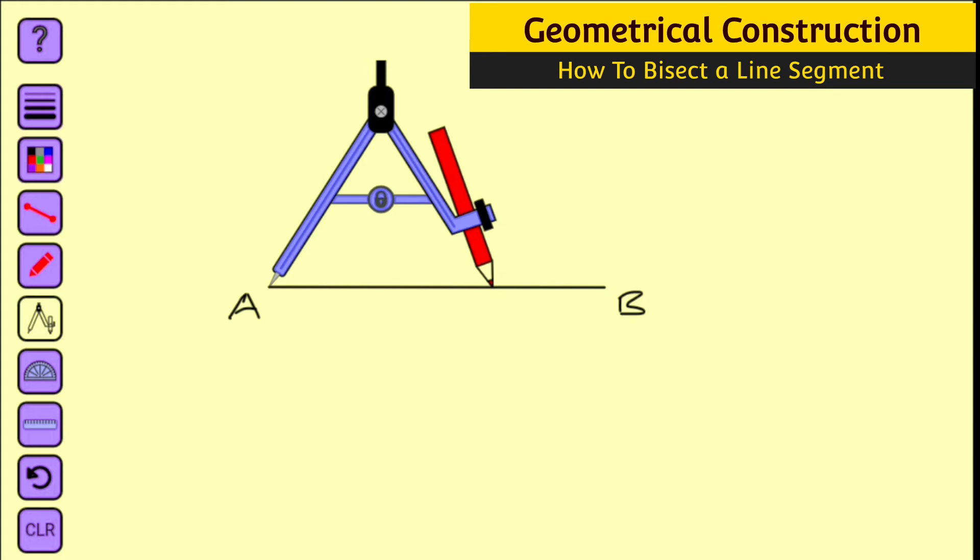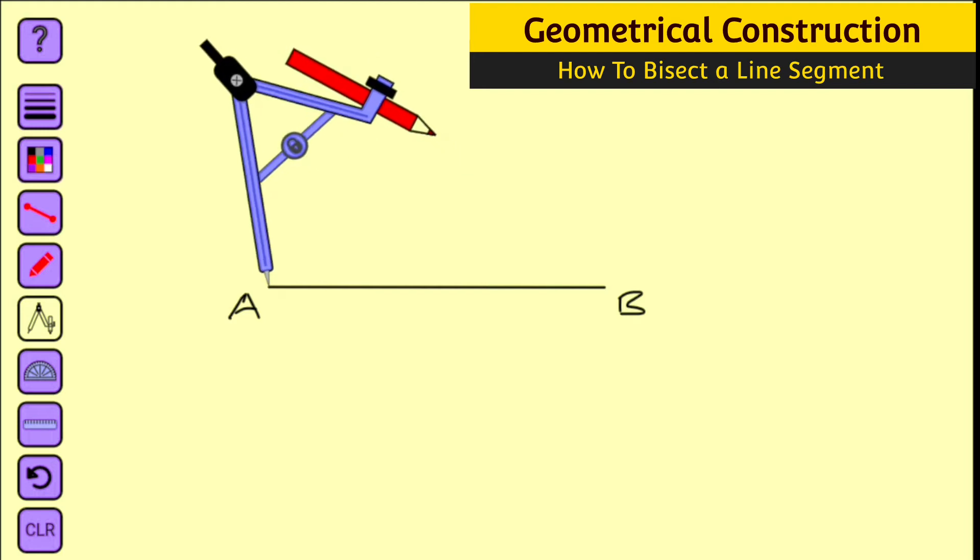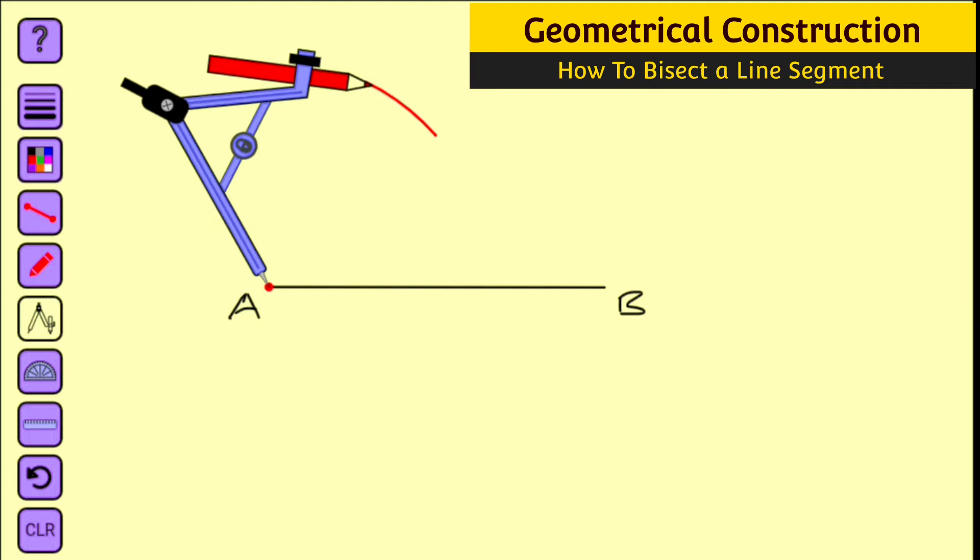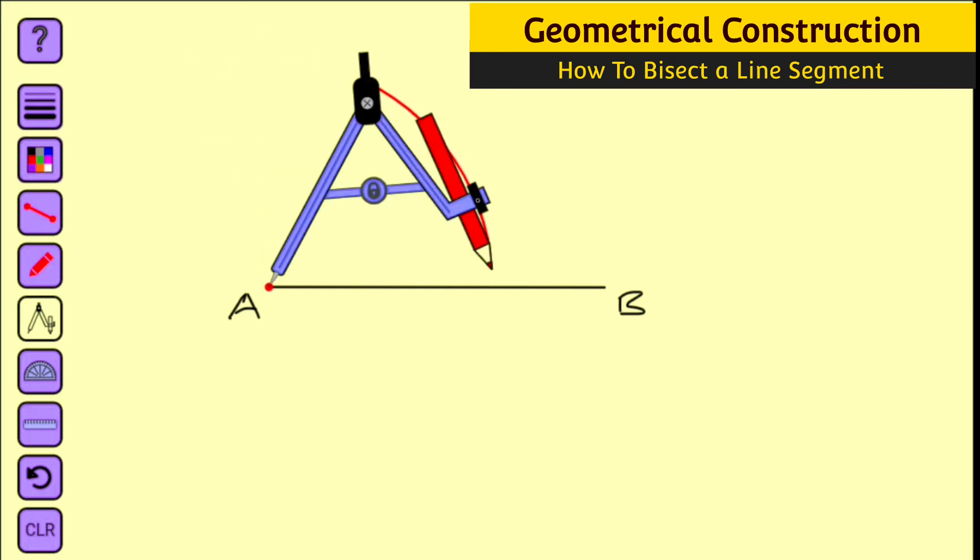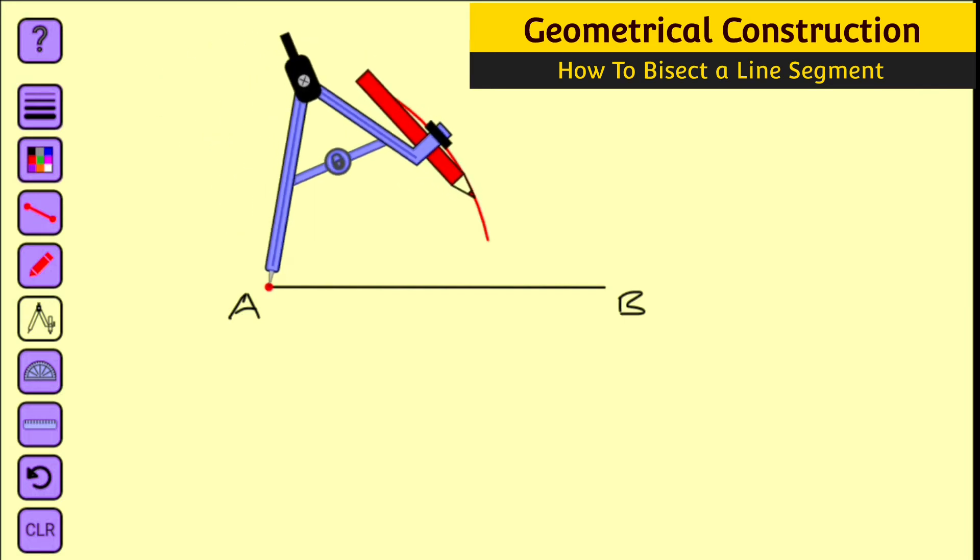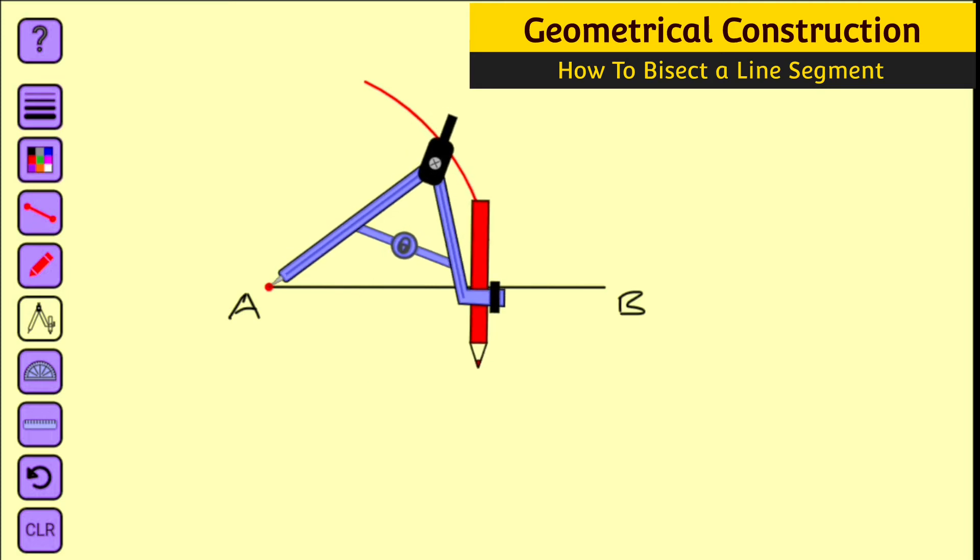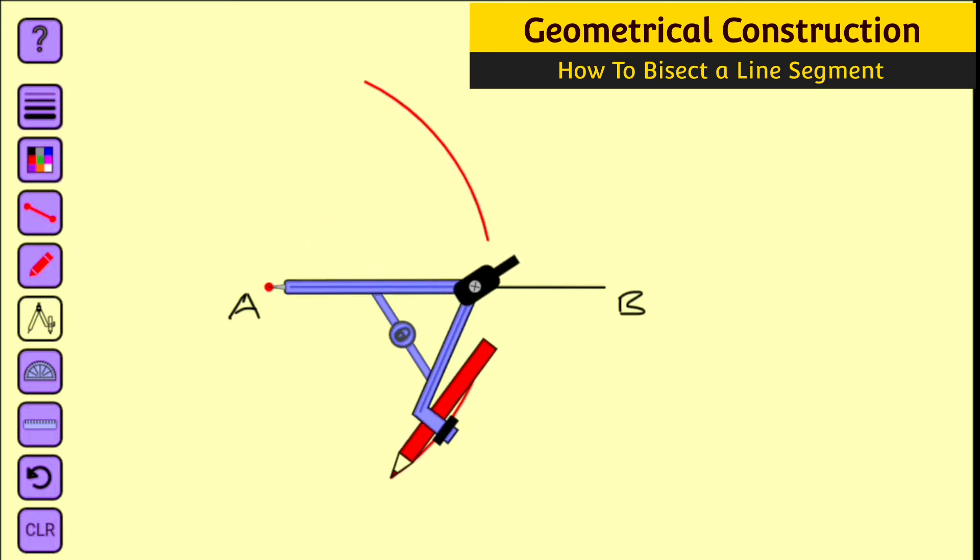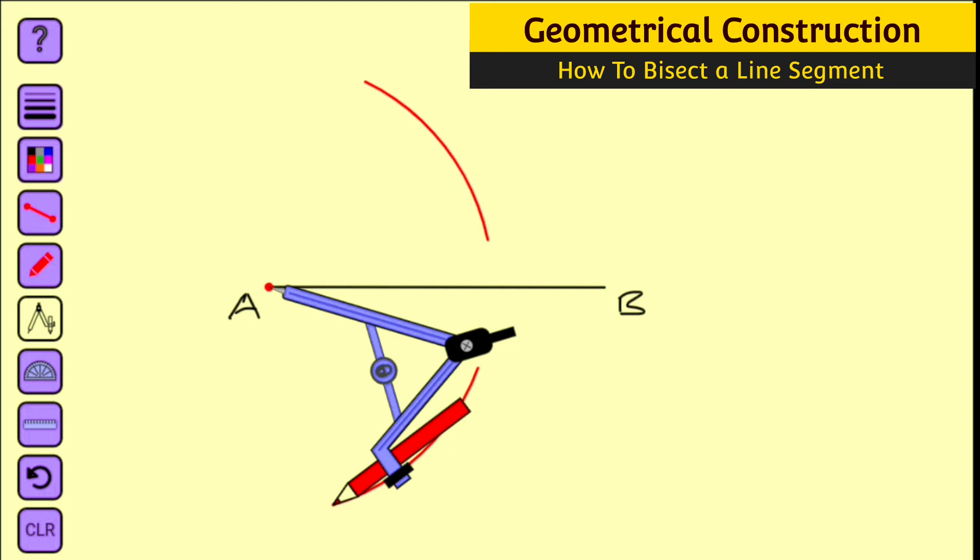Next, we are going to construct two arcs, one at the top and one at the bottom of this line AB. So this is my first arc, and I am going to draw another onto the bottom. I'm done. Then you remove the pointer and place it at B.